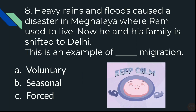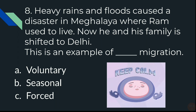Question 8: Heavy rains and floods caused a disaster in Meghalaya, where Ram used to live. The conditions were very drastic and the natural disaster hit there. So Ram and his family shifted to Delhi. This is an example of which type of migration — A) Voluntary, B) Seasonal, or C) Forced migration?